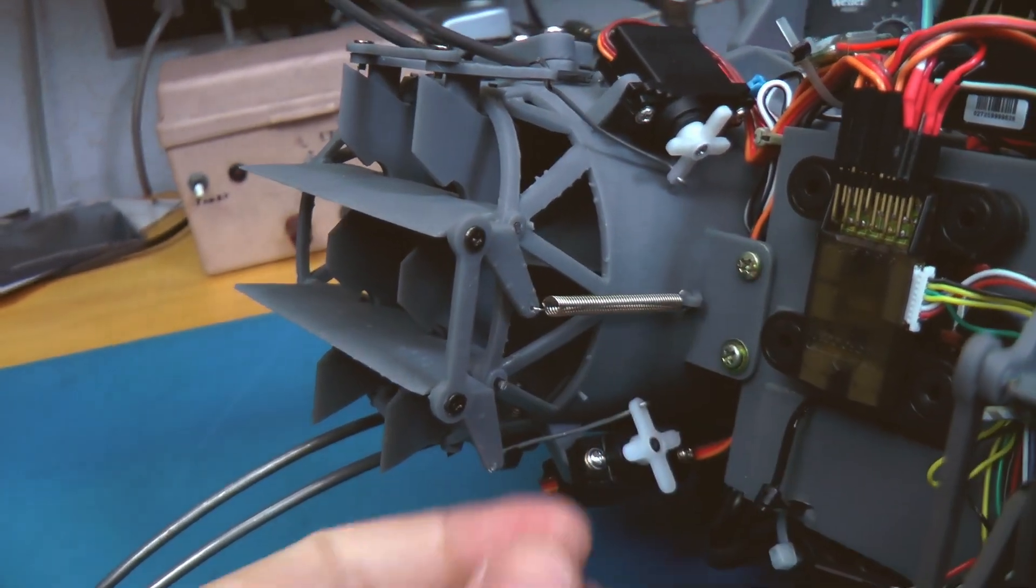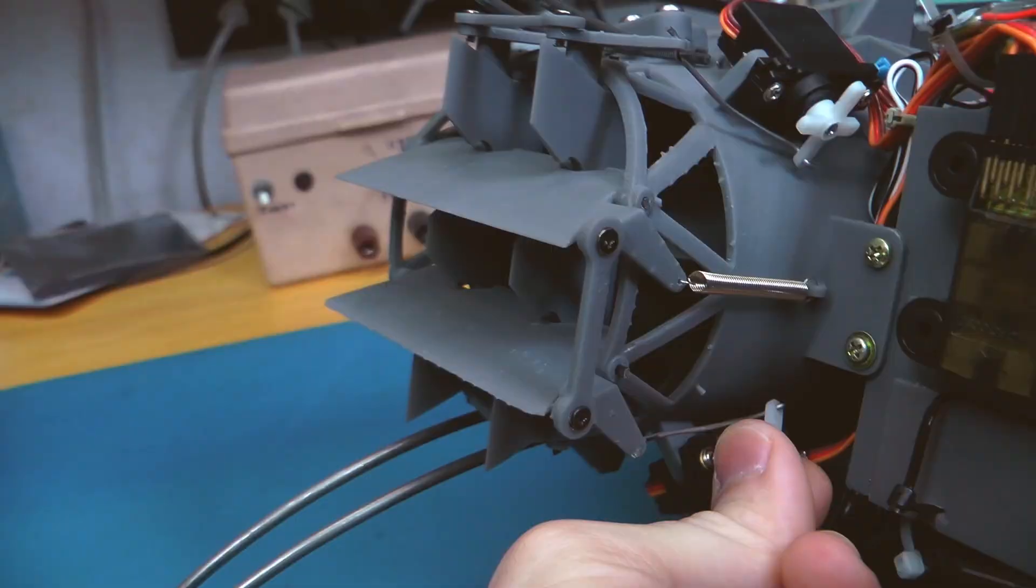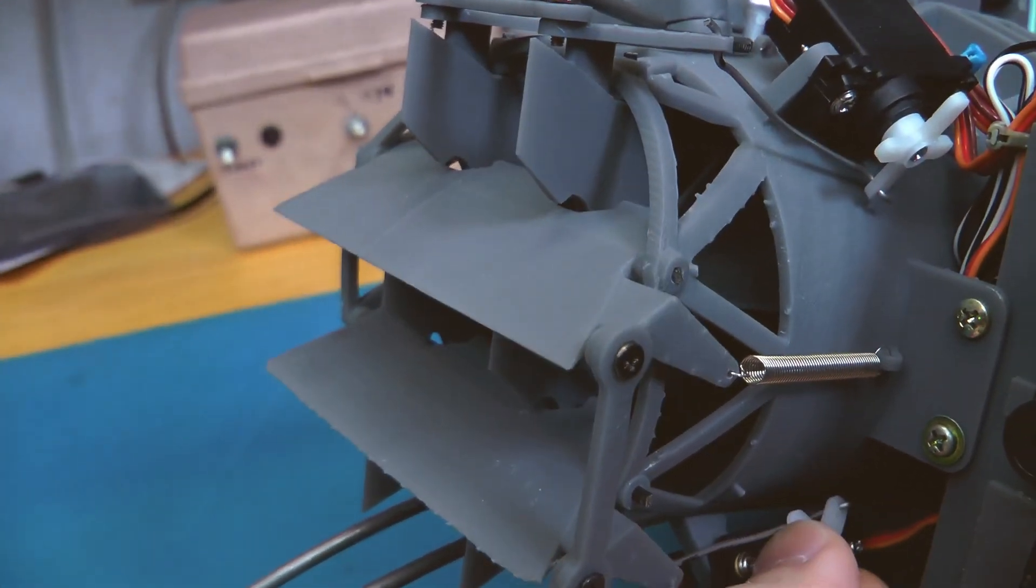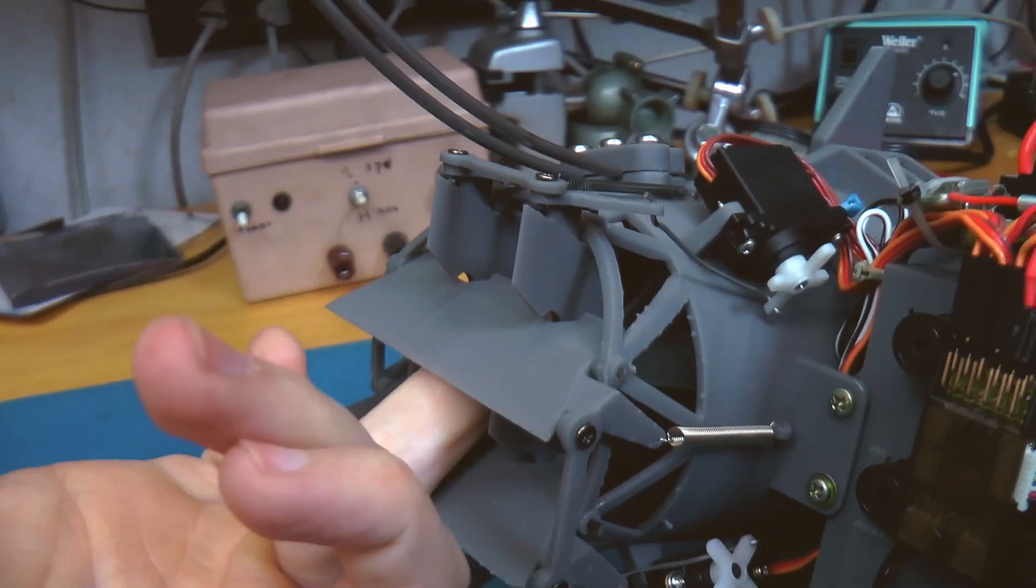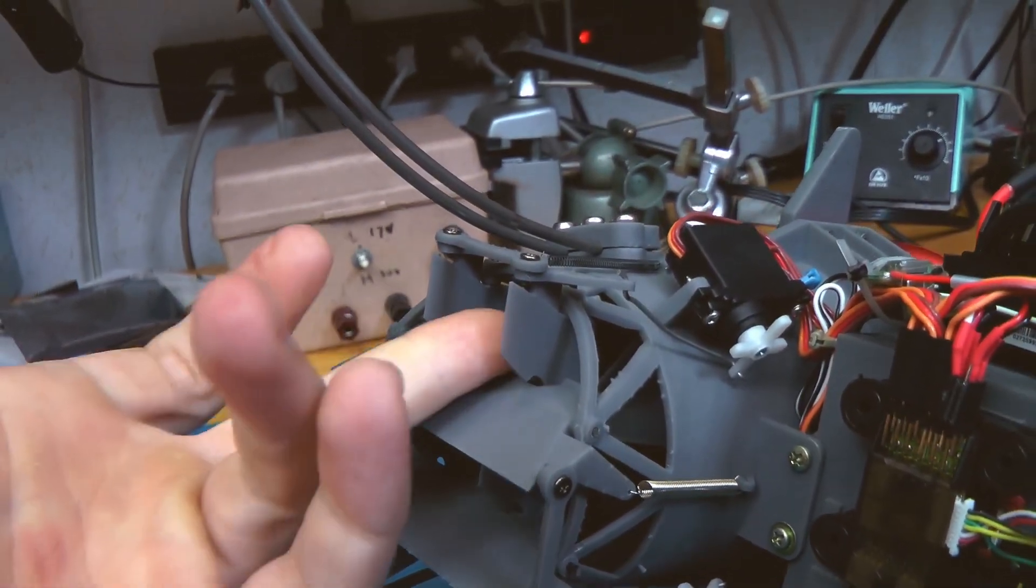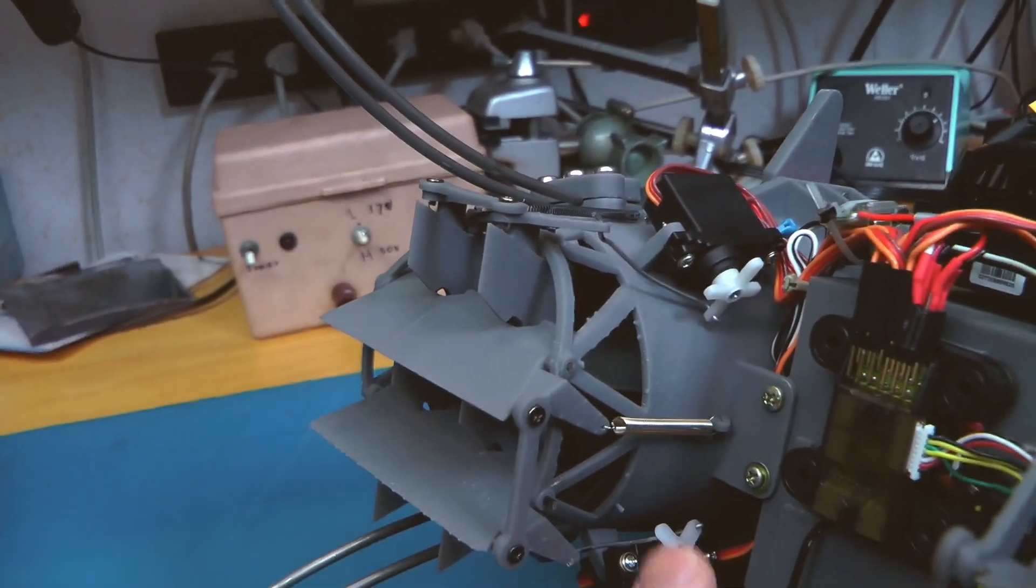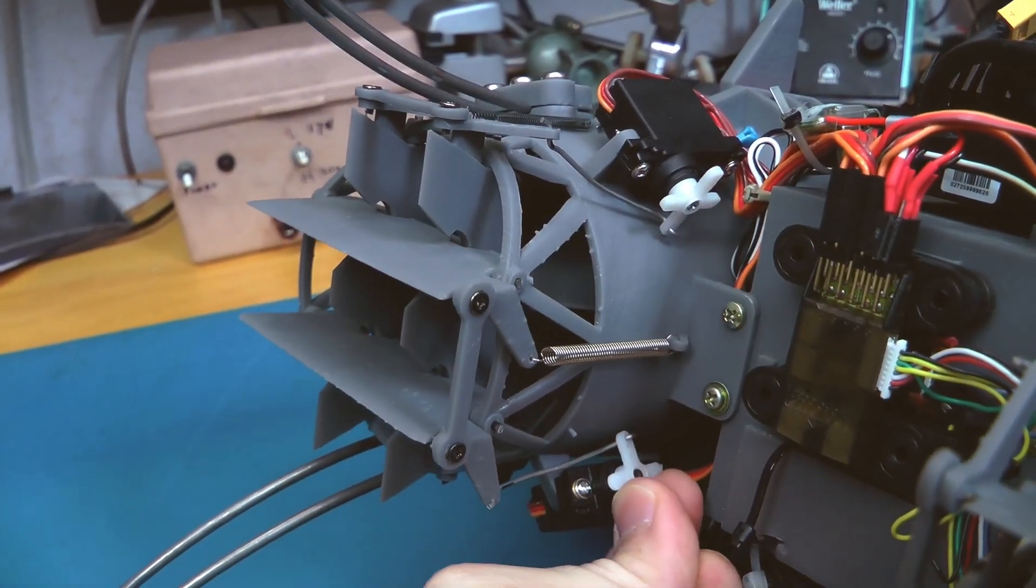This works because of the design of the vanes. There's a portion that is in front of the pivot point and this allows the airflow to cancel out the torque on the vanes, and that's why this approach works.